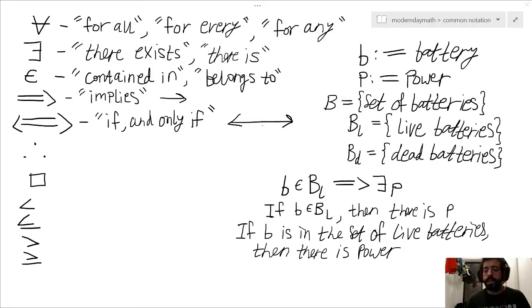Alright, so beginning the next example, we still have lowercase b is a battery and lowercase p is power. But now I've added this uppercase B, this uppercase B subscript L which will just say BL, and this uppercase B subscript D which will say BD, to define the set of batteries, the set of live batteries, and the set of dead batteries respectively. So live batteries and dead batteries are going to be a partition of the entire set of batteries. And so when I talk about a set, we can think of a basket with distinct objects that share a common type. In this case we're talking about this set of batteries.